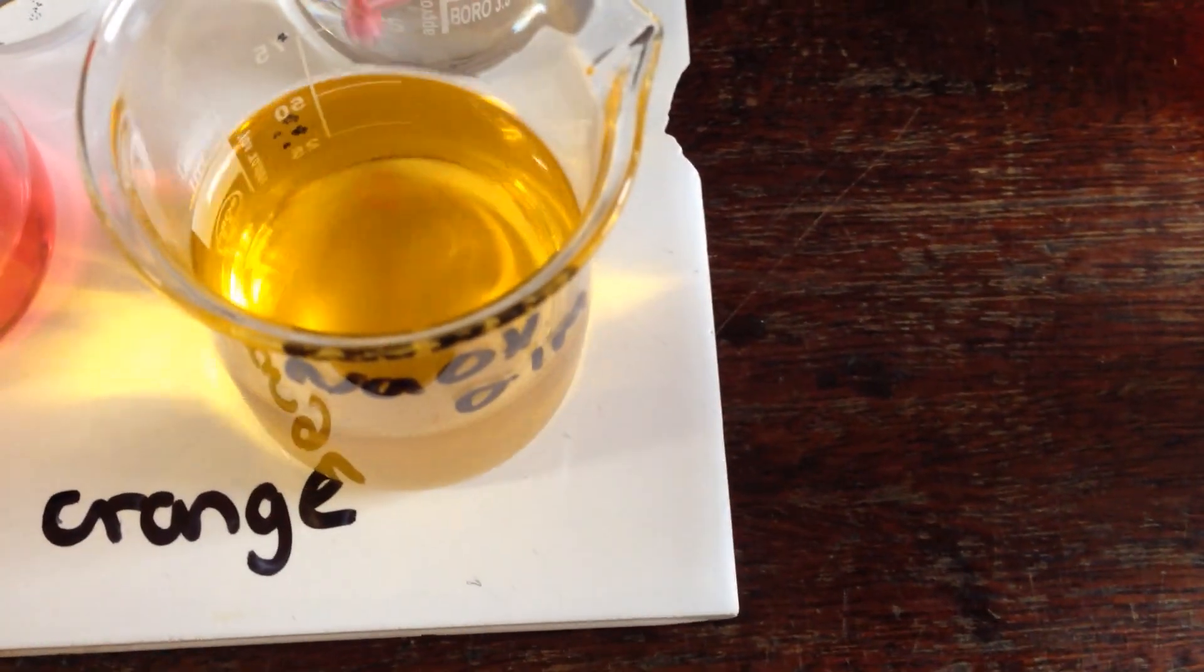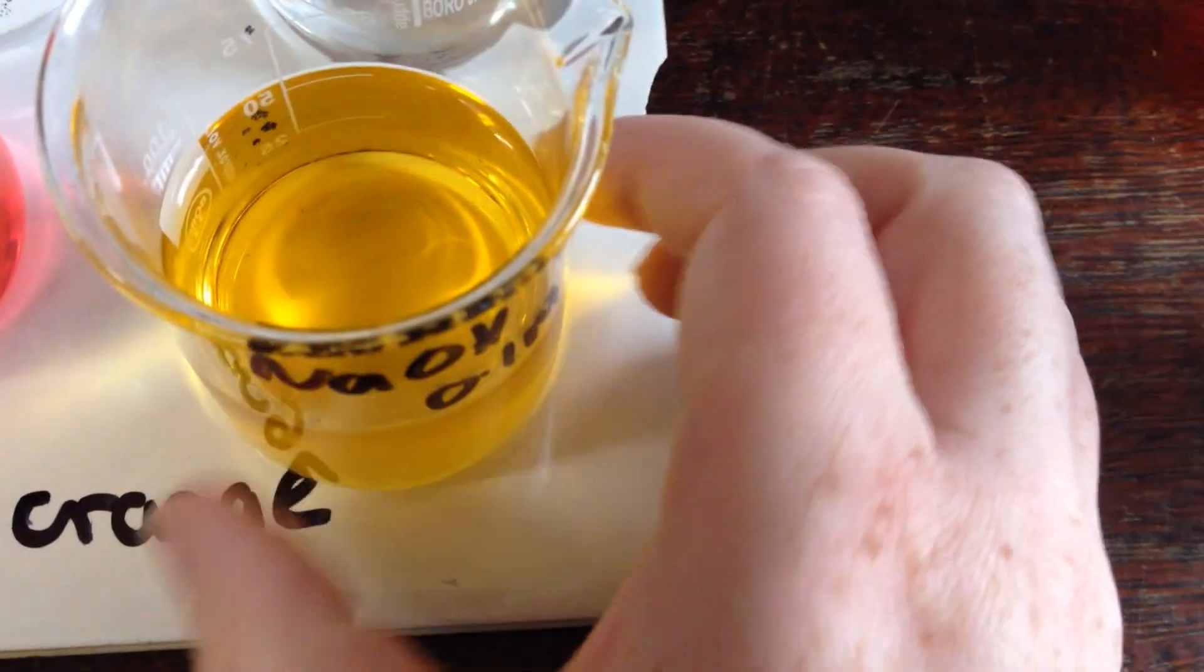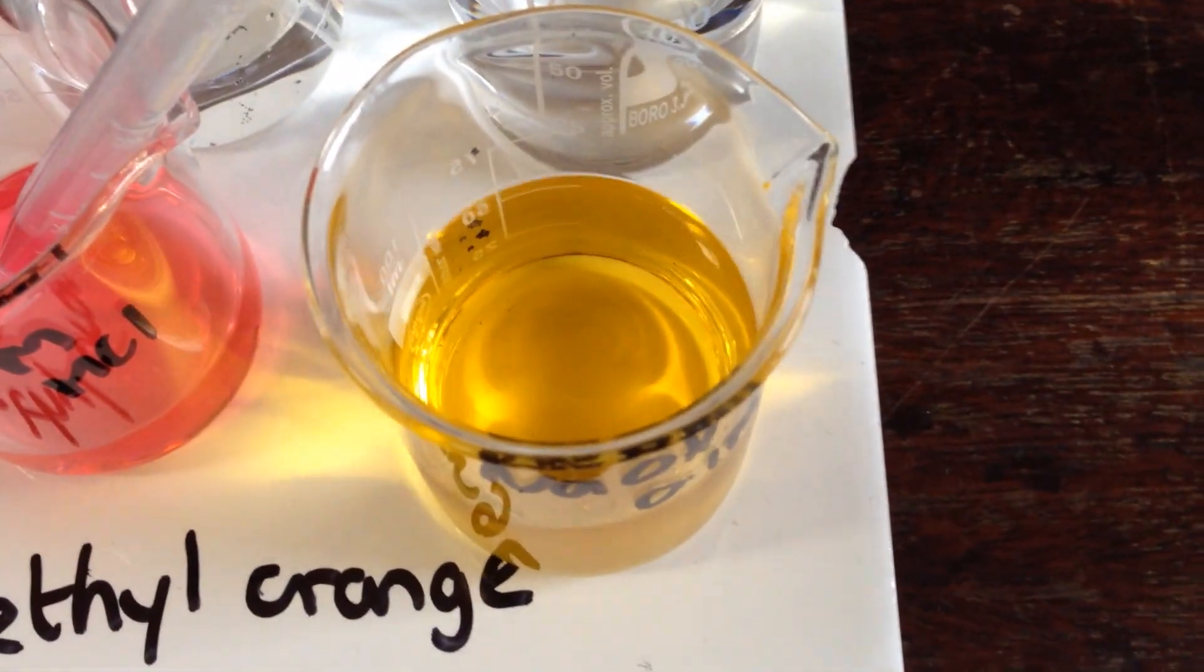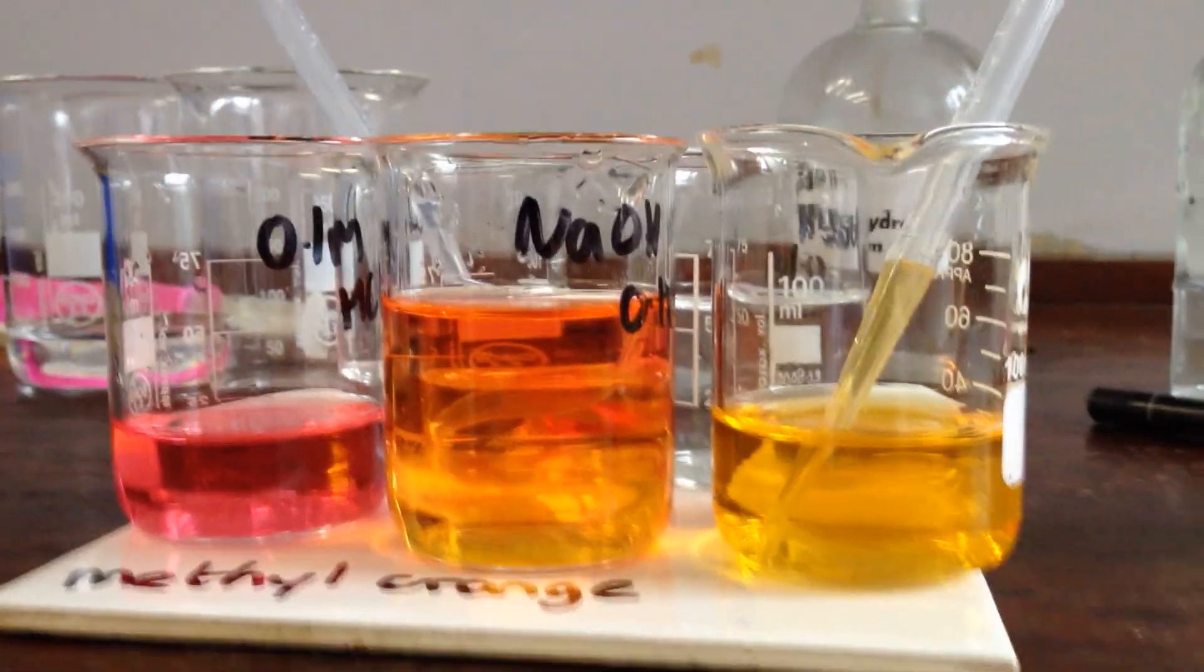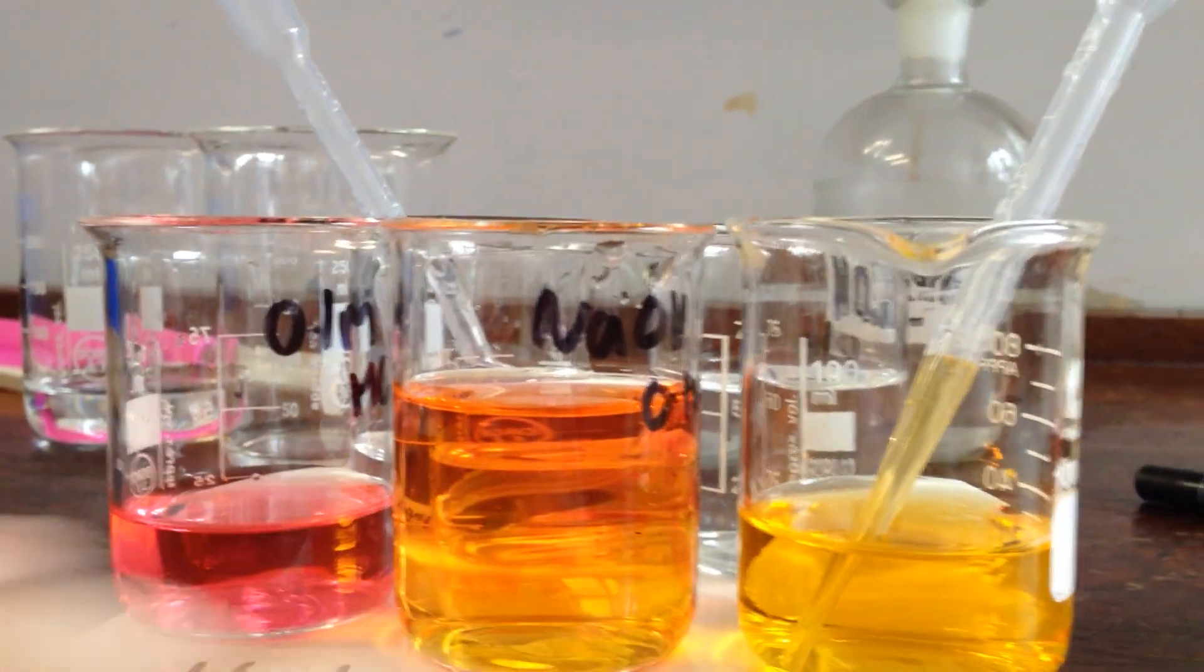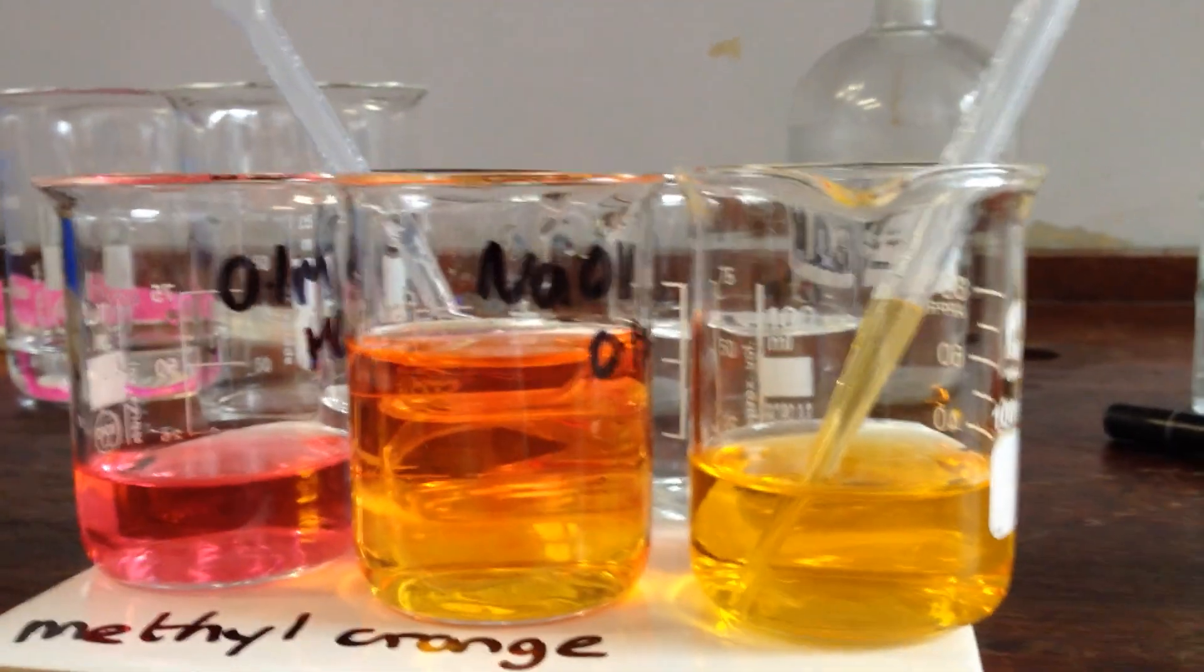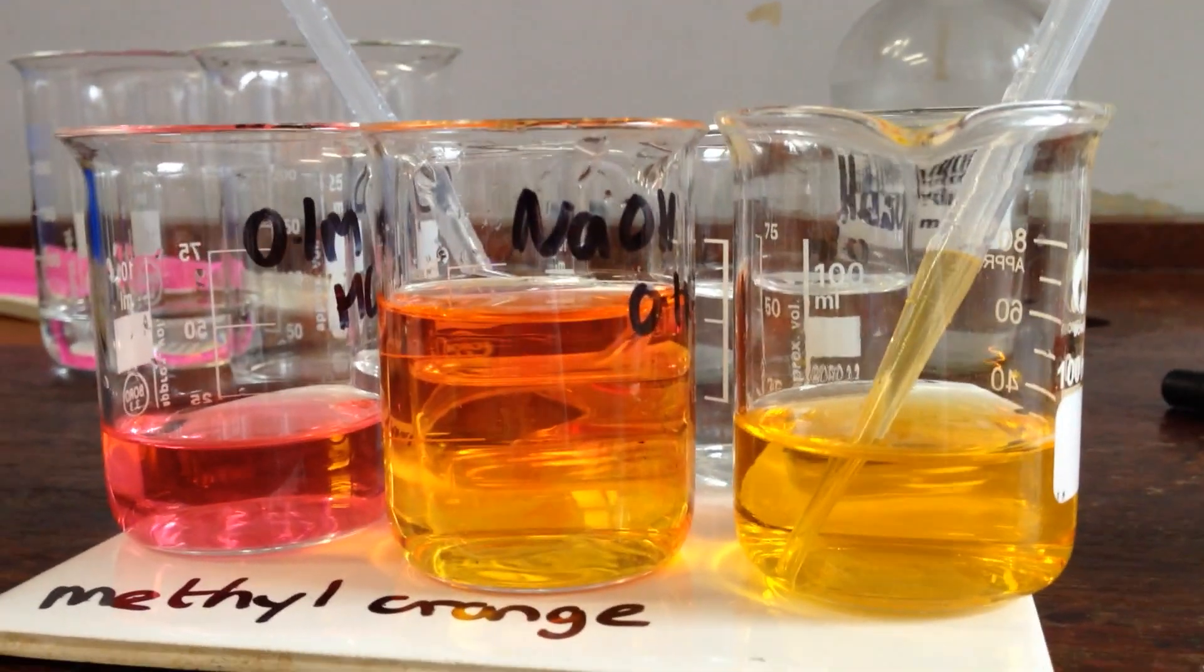When you're doing this, you can always have a reference sample by the side so you can see the color change happening. So there we have it: our alkali in yellow, our acid in red, and our orange mix of the two.